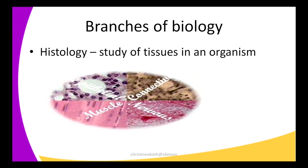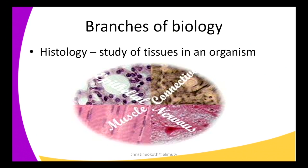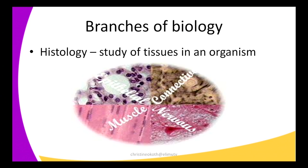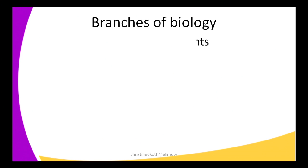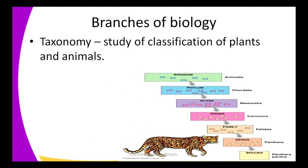The next branch of biology is histology — the study of tissues in an organism. A tissue is made by a group of cells which gather together to perform a specific function. We have different types of tissues: muscle tissue, connective tissue, neuron tissue, and epithelial tissue — all with different functions. We study the impact and function of these tissues in various organisms. This applies not only to animals but also to plants, because plants are living things made up of cells. From a cell you get a tissue, from a tissue you get an organ, an organ system, then an organism.